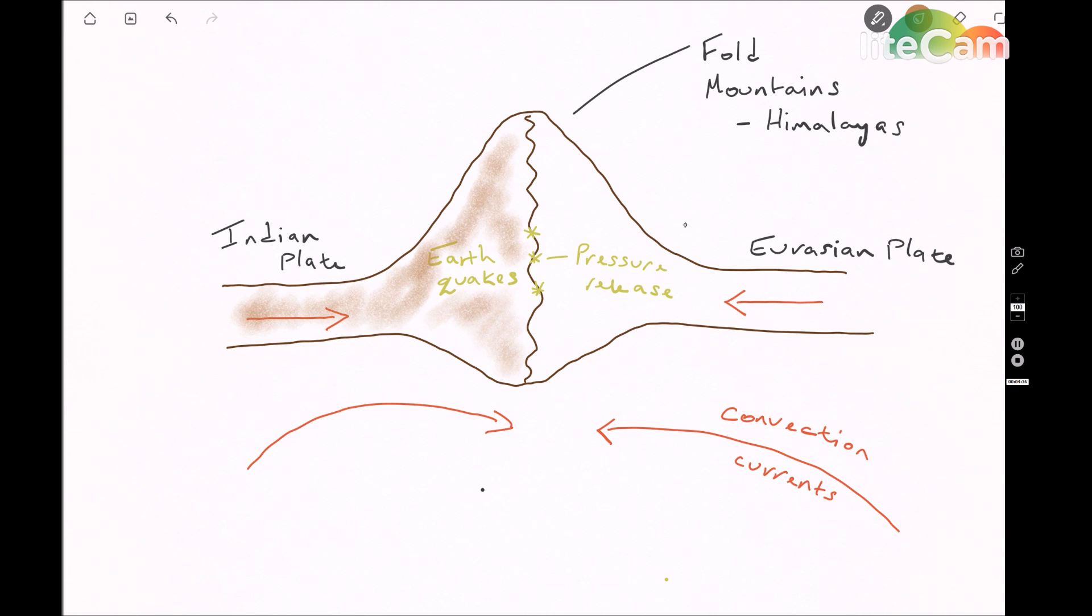The type of feature that you get that forms on a collisional plate boundary is fold mountains. And as you can see in the example that I'm putting over here on this YouTube,